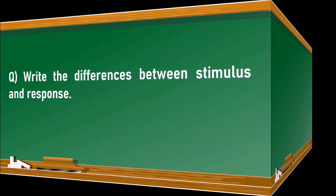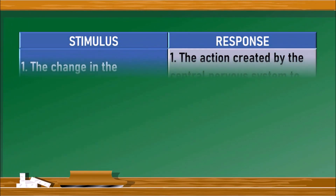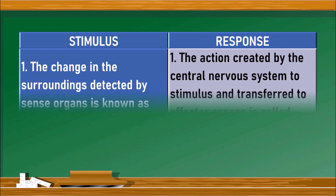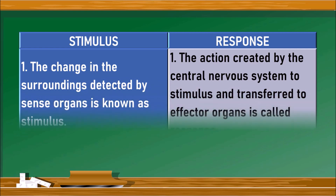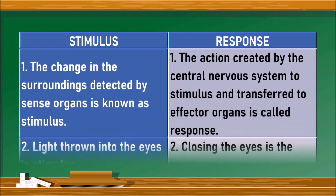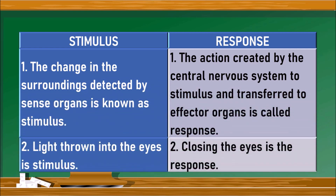For this we need to draw a table with stimulus and response on either side. The change in the surroundings detected by sense organs is known as stimulus, whereas the action created by the central nervous system to the stimulus and transferred to the effector organ is called as response. The example for stimulus is light thrown into the eyes, whereas the response is closing the eyes.